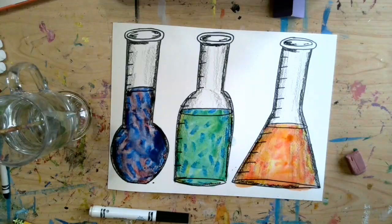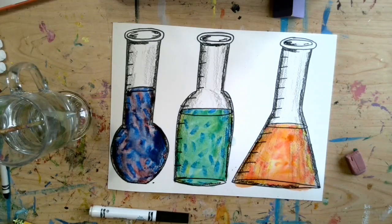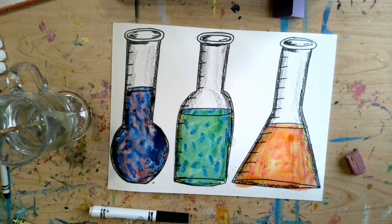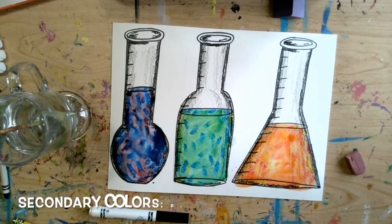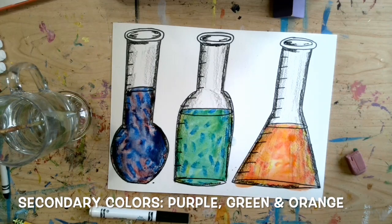All right, there we go. We just had a science experiment on our art project. And we mixed those primary colors to create the three secondary colors: purple, green, and orange.